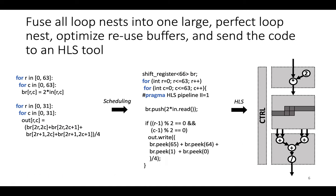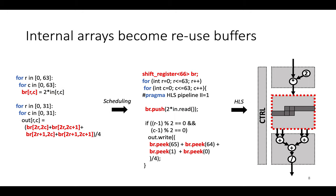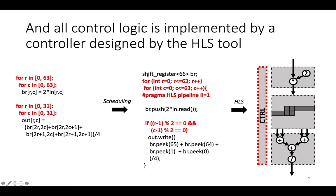The strategy we're going to use is to fuse all loop nests into one large perfect loop nest, optimize the reuse buffers into shift registers or line buffers, and send the code to an HLS tool. In this strategy, arguments to the function become FIFOs — inputs and outputs to the design. Internal arrays become customized reuse buffers; for example, BR could become a shift register or a line buffer. All control logic — the original for loops and the for loops and guards in the new fused loop nest — are implemented by the HLS tool in a single global controller that maps every operation to the clock cycle where it happens.